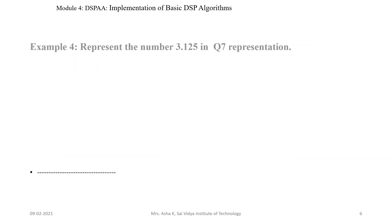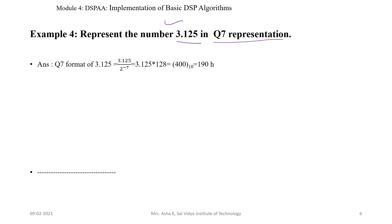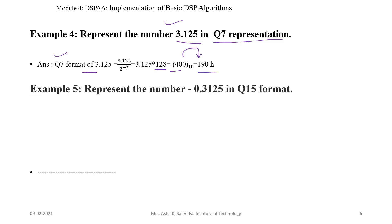Example 4: Represent the number 3.125 in Q7 representation. The Q7 format of 3.125 equals 3.125 divided by 2 to the power minus 7, which is nothing but 3.125 multiplied by 128, giving 400 in the decimal number system. Convert that into hexadecimal and we get 190 hexadecimal.